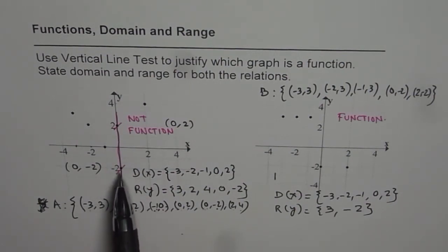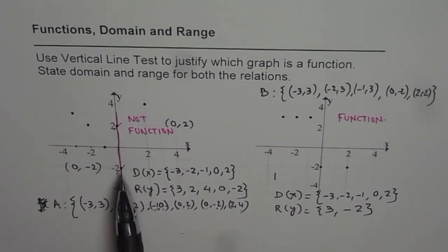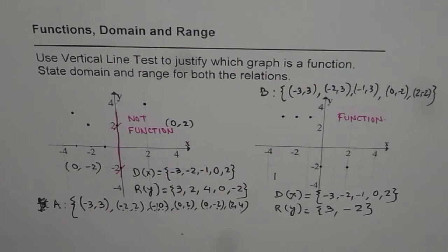Now in the first set, the first relation is not a function, since for x value of zero, we have two y values: two and minus two. And therefore it is not a function. It is a relation though. The second one is a function since it passes vertical line test. I hope that makes it clear. Thank you and all the best.